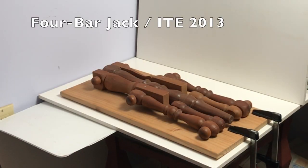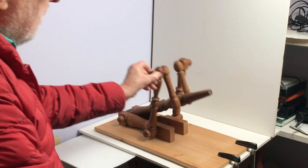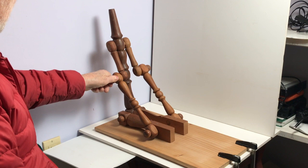This is Four Bar Jack, a little sculpture I made in 2013 during the ITE in Philadelphia. Jack demonstrates the basic four bar linkage which engineers use to translate motion.